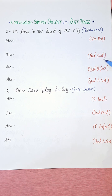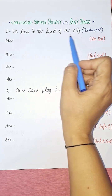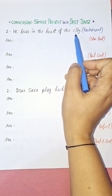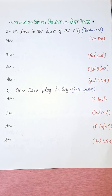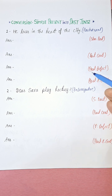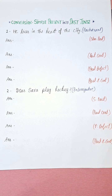The four types are: simple past, also known as past simple or past indefinite tense; past continuous, also known as past progressive tense; past perfect; and past perfect continuous tense, also known as past perfect progressive tense.